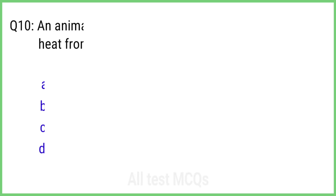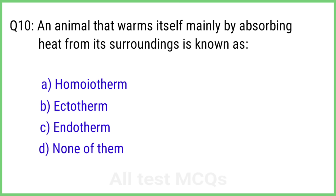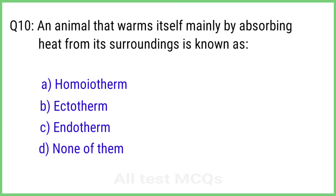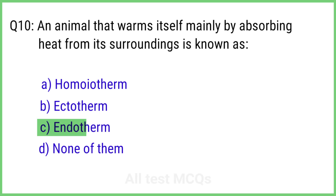Question 10. An animal that warms itself mainly by absorbing heat from its surroundings is known as? The correct answer is option C: Endotherm.